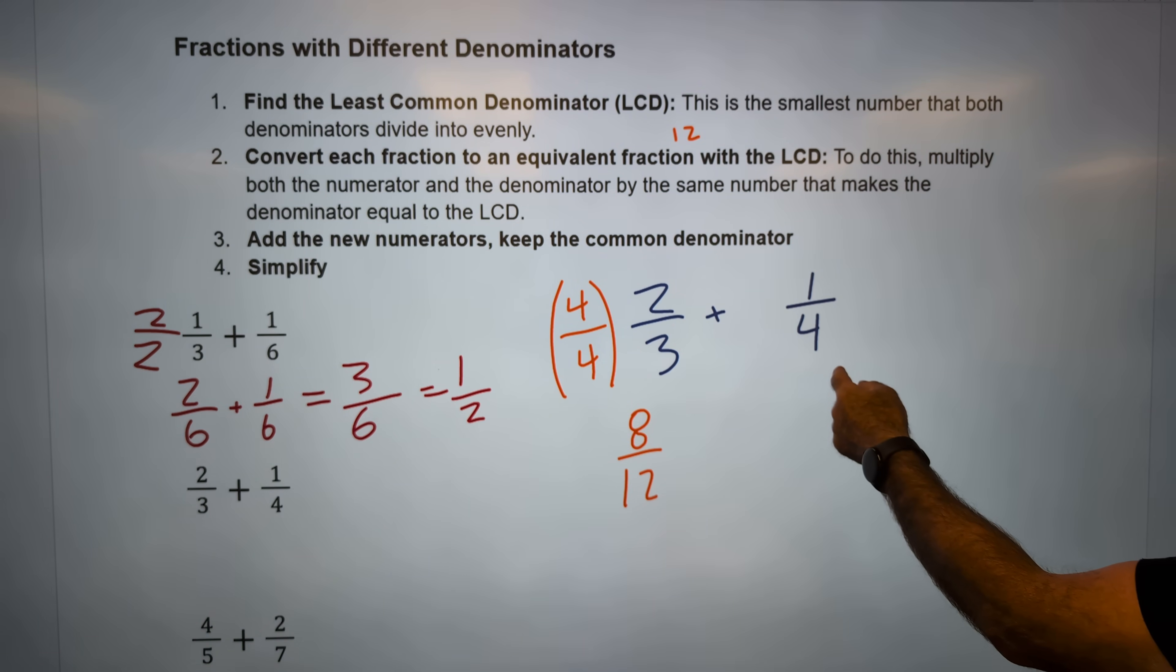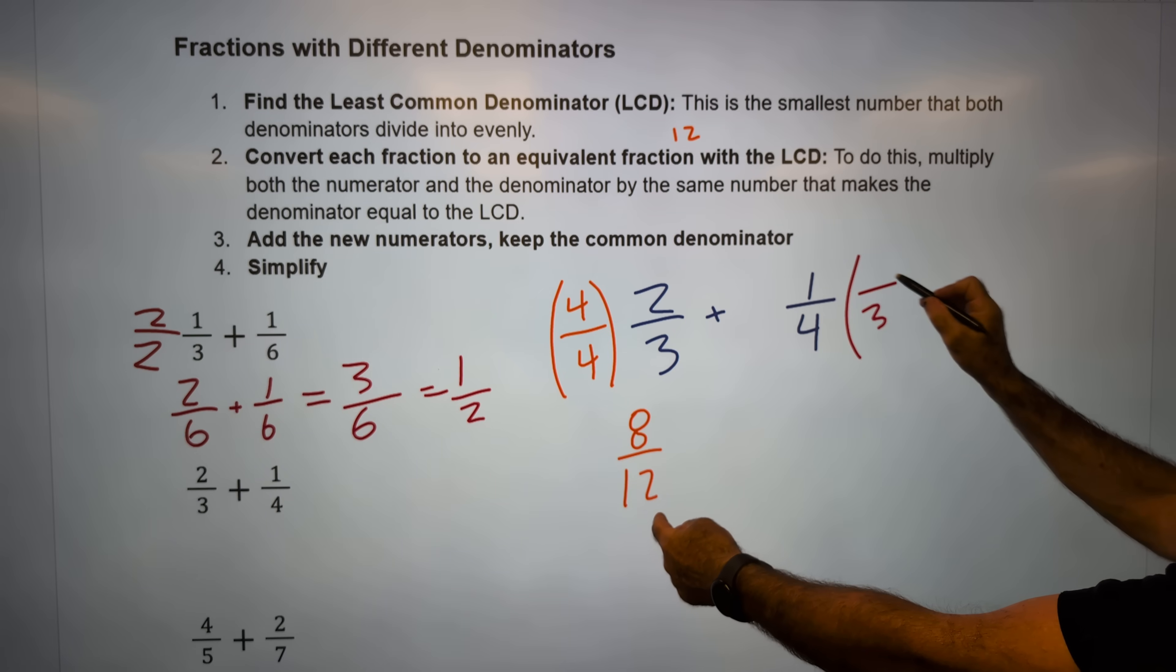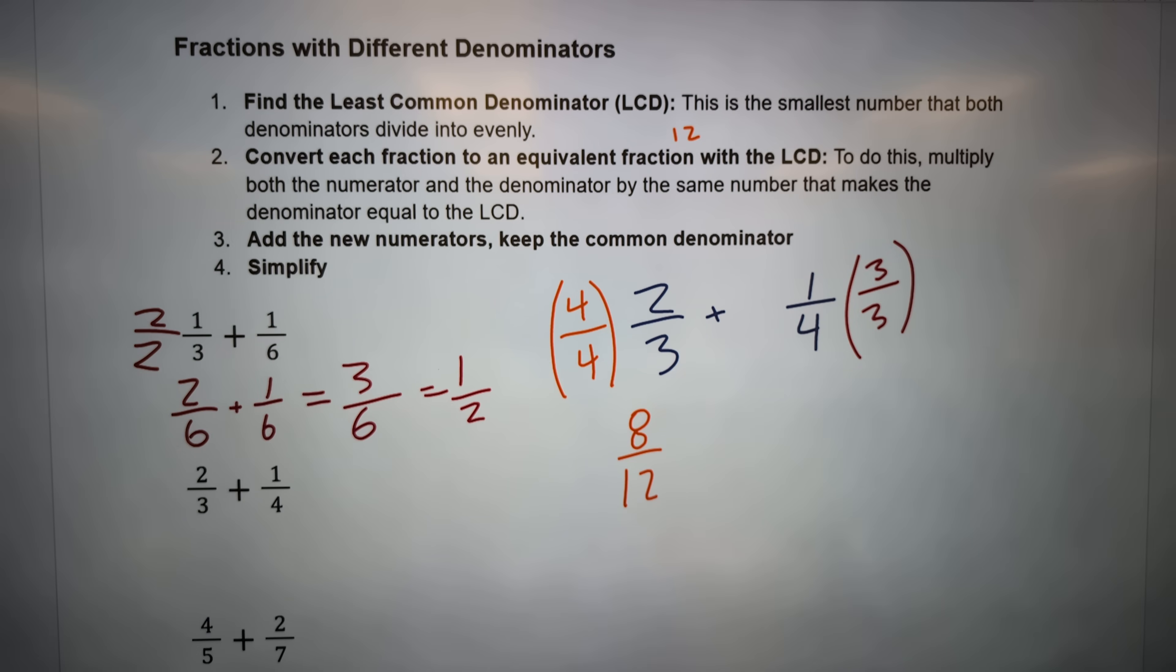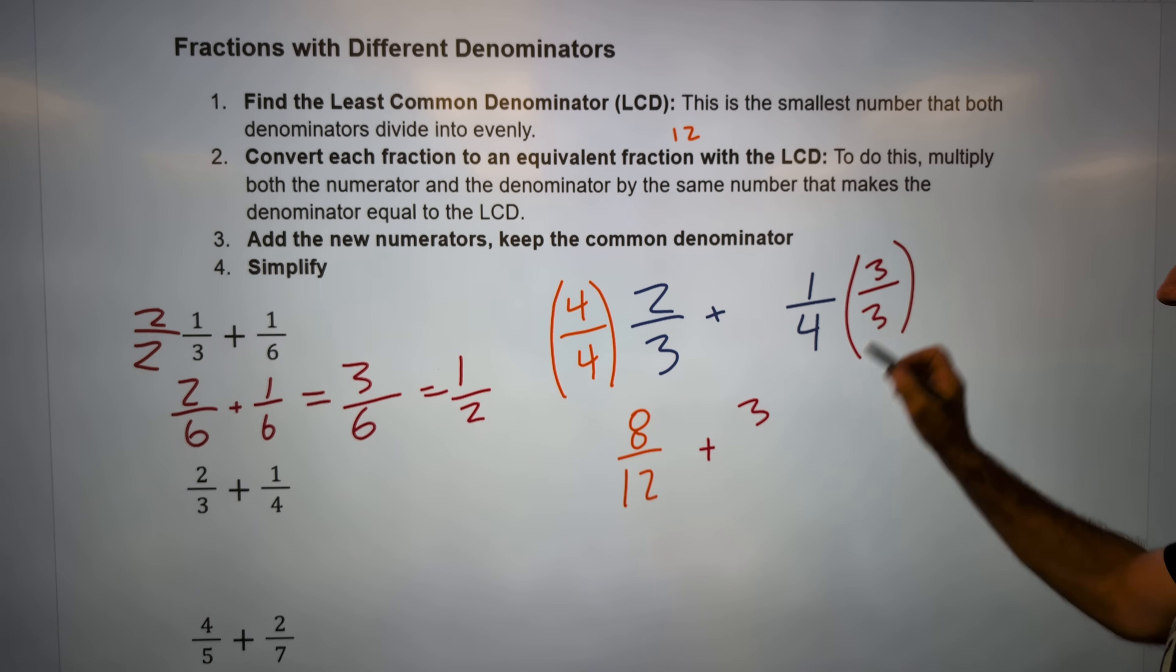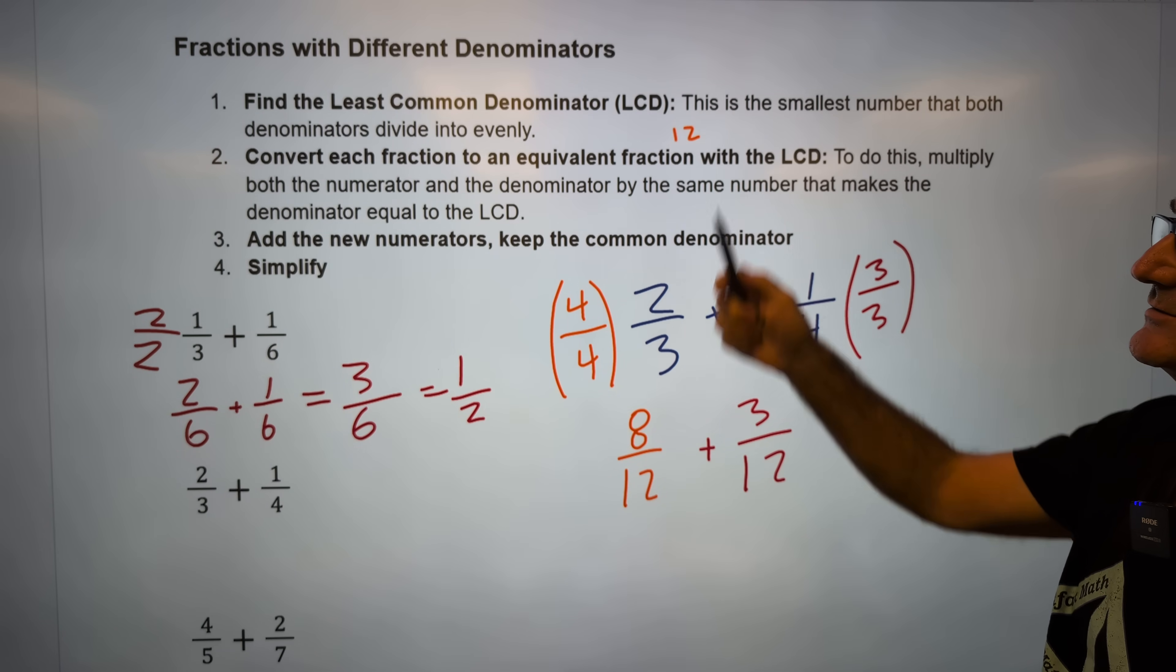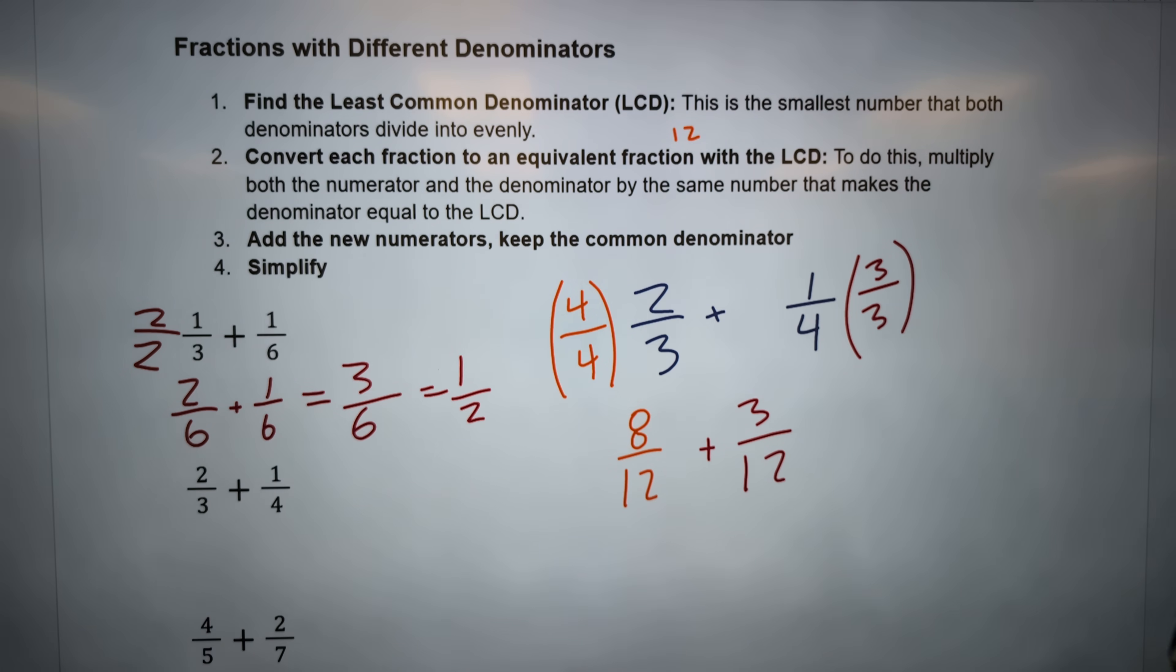My least common denominator in this problem was twelve. How do I get that four into a twelve? I have to multiply it by three. I'm looking for an equivalent fraction with a bottom number denominator of twelve. One times three is three. Four times three is twelve. I converted them into equivalent fractions with that common denominator. I add the numerators. Eight plus three is eleven. Keep the bottom number twelve.